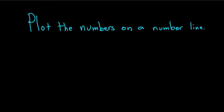Plot the numbers on a number line. So we have a set of numbers containing 1.7, the number pi, the number negative 3, and the number 2.7 with a bar.